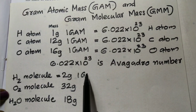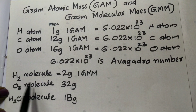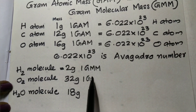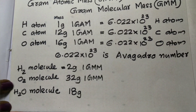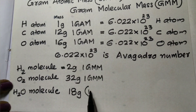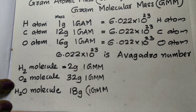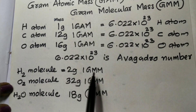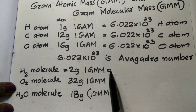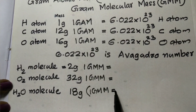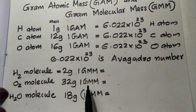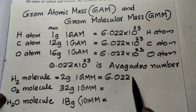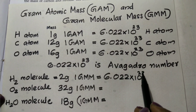The gram molecular mass (GMM) of hydrogen molecule is 2 grams. 1 GMM of oxygen molecule is 32 grams. 1 GMM of water molecule is 18 grams. This is the Avogadro number — 6.022 into 10 raise to 23.